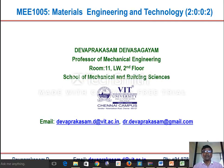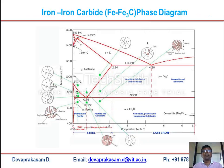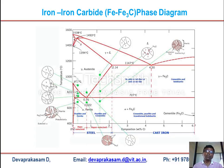In this lecture we are going to learn the iron–iron carbide phase diagram. It is a binary phase diagram — iron and carbon. The x-axis on the bottom represents composition in weight percentage of carbon and iron, and the y-axis represents temperature in Celsius.